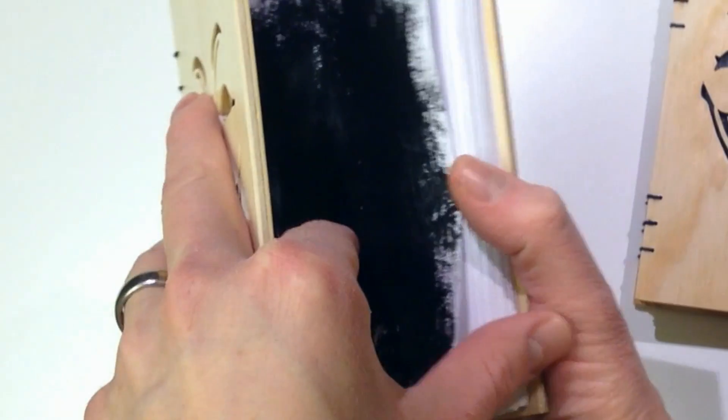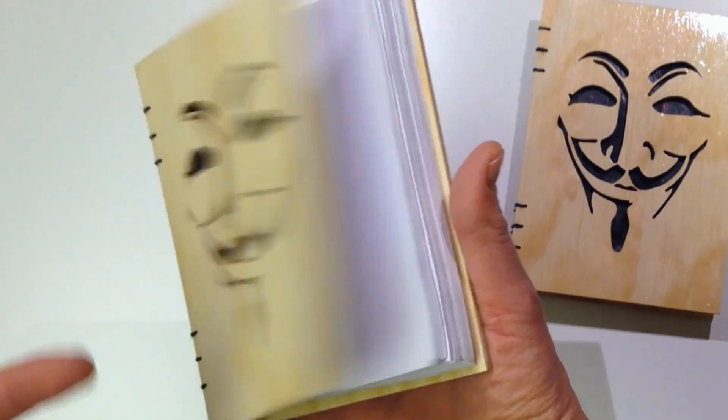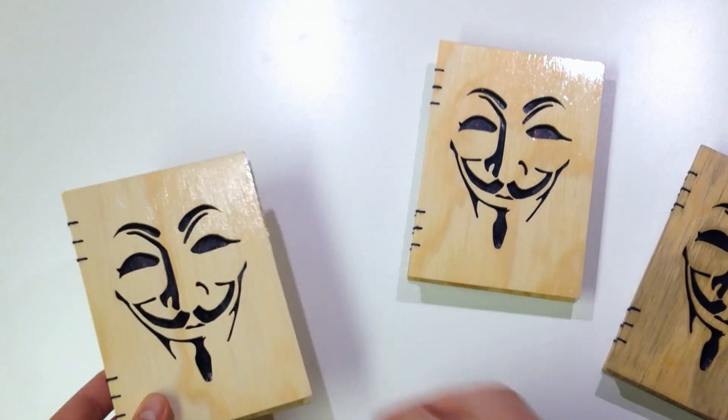Today I'll be making this Coptic Stitch Wooden Cover Notebook with the famous face of the Guy Fawkes mask. I made three of these with slightly different colors.